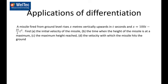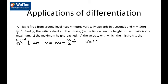For initial velocity in part a, that's where t is equal to zero. We put t equals zero into the velocity function. The velocity function is going to be 100 minus (50/2)t. Putting t equals zero into that, our initial velocity is 100 meters per second.